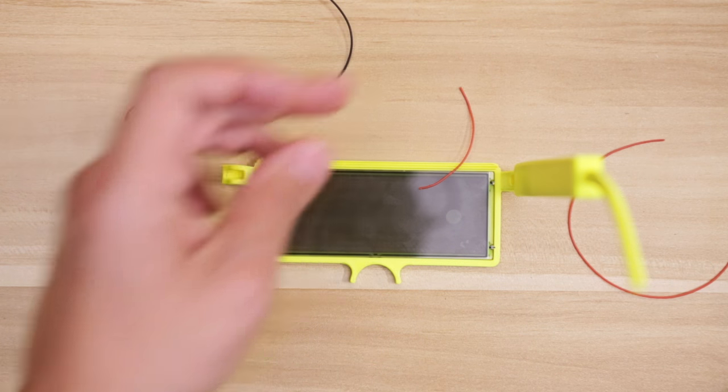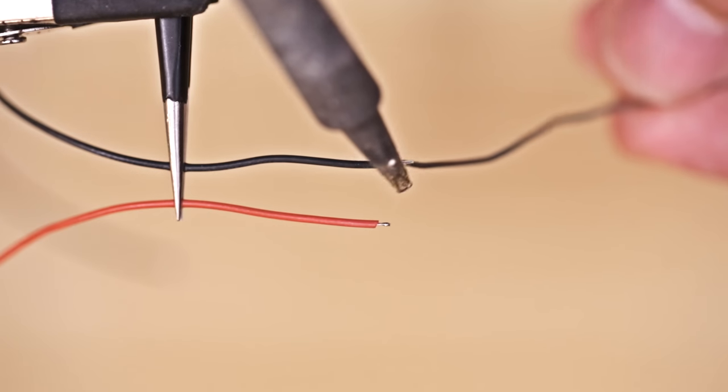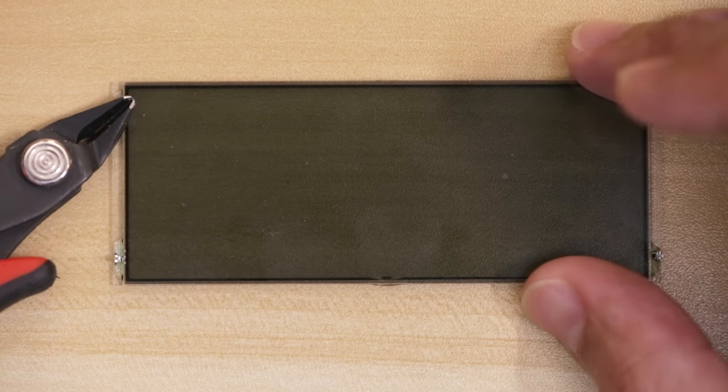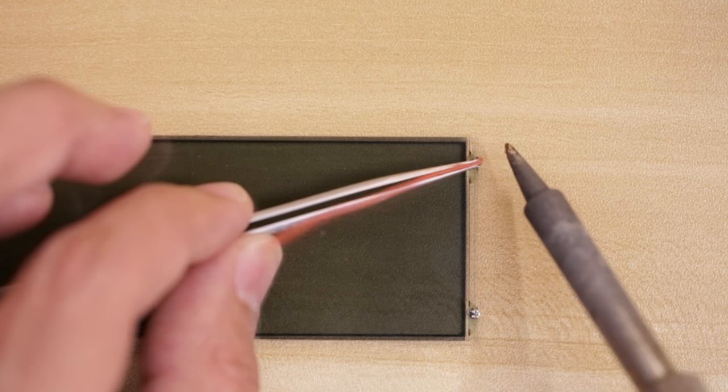Then do the same for the positive connection. We'll strip and tin the tips of each wire and trim the electrodes on the glass short. Now we can solder the wires to the shortened electrodes.